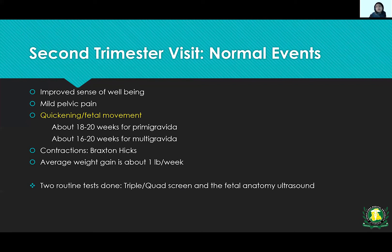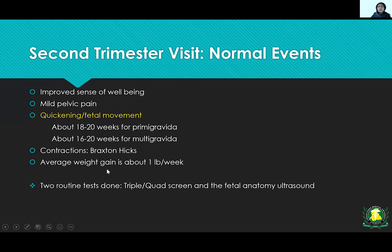In the second trimester, there is an improved sense of well-being — nausea and vomiting usually get better. There may be mild pelvic pain. The patient can start to feel fetal movements, called quickening: at 18 to 20 weeks for primigravidas and as early as 16 weeks for multigravidas. Braxton-Hicks contractions — false, not actual labor contractions — can occur. Average weight gain in the second trimester is about one pound per week. The two routine tests done are the triple or quad screen and the fetal anomaly ultrasound.